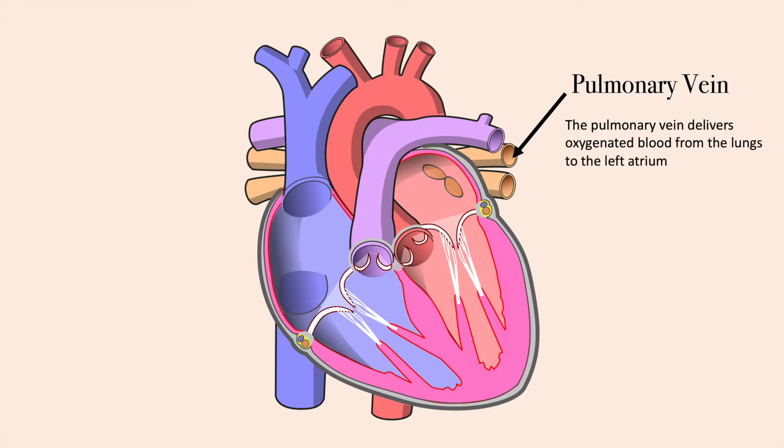The pulmonary vein delivers oxygenated blood from the lungs back to the left atrium of the heart.